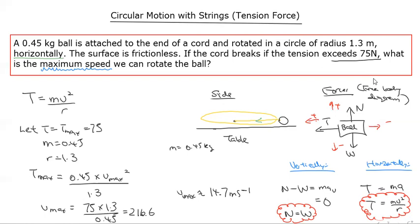Given the constraints of this question - that your tension can't exceed 75, your radius is 1.3, and you've got a mass of 0.45 - that means you can only go at 14.7 meters per second.